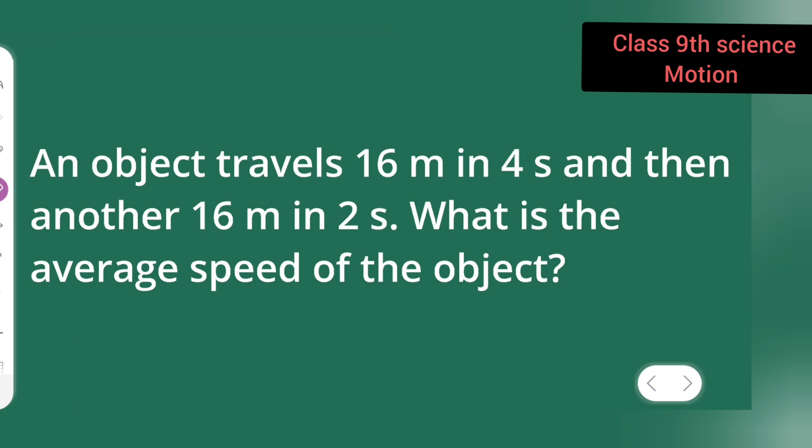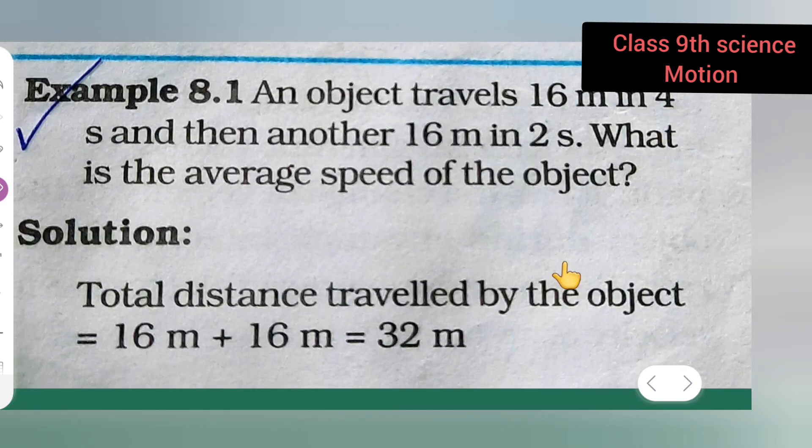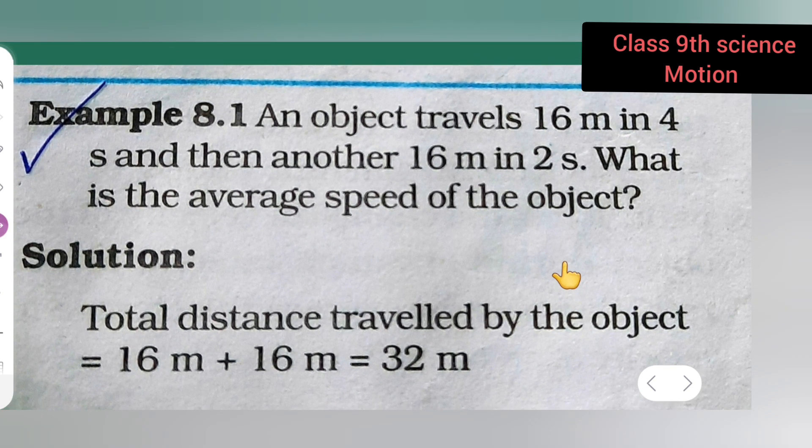Let us see. First, you all take down this example. Example 8.1, it is from your textbook. An object travels 16 meters in 4 seconds and then another 16 meters in 2 seconds. What is the average speed of the object?